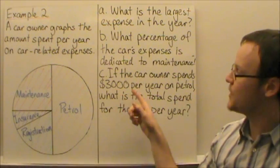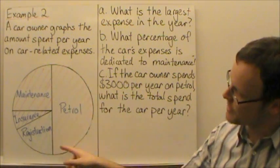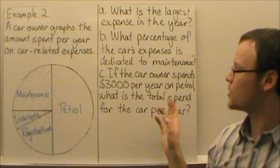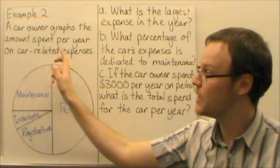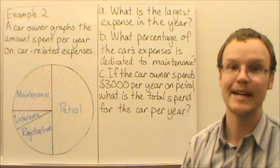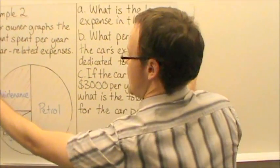If the car owner spends $3,000 per year on petrol, so this amount is $3,000, what is the total spend of the year? If 50% is $3,000 times 2, the total is going to be $6,000, and the answers are here.